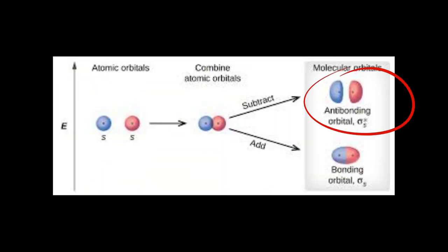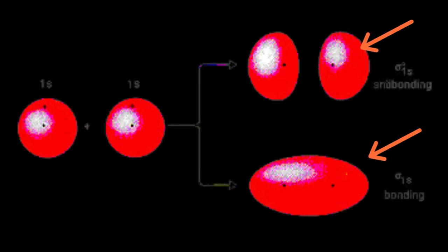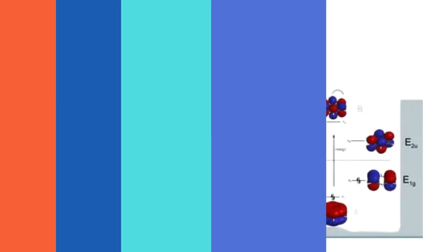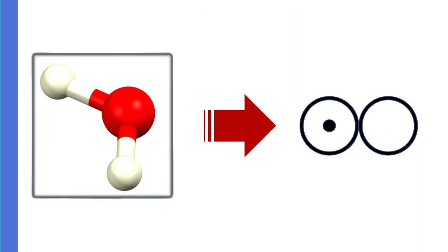These molecular orbitals can either be bonding or anti-bonding. Electrons in bonding molecular orbitals contribute to bond stability, while those in anti-bonding orbitals can weaken the bond.